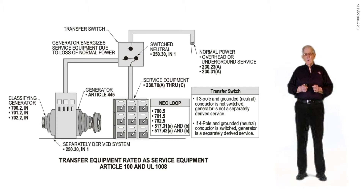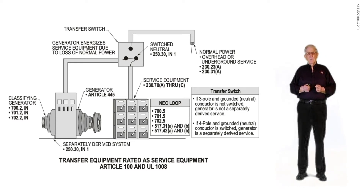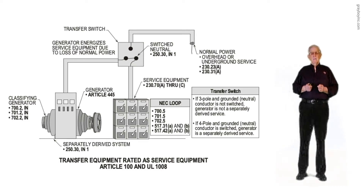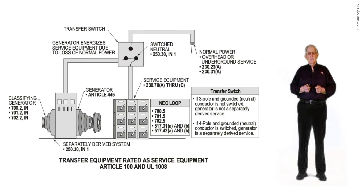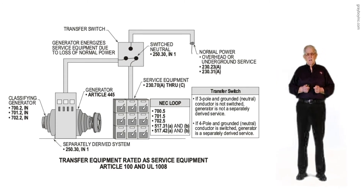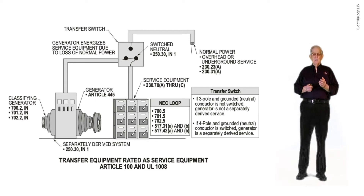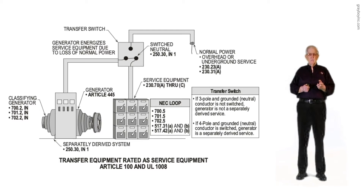If it happened to be classified a 701 generator, you could mix the wiring with the normal power, and you could do the very same if it was classified a 702 generator, which is an optional standby generator. With an optional standby generator, you can bring it on manually or automatically and design it to supply the loads that the user wishes to supply.